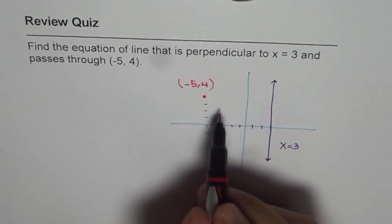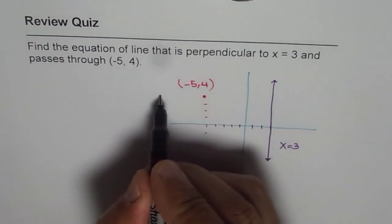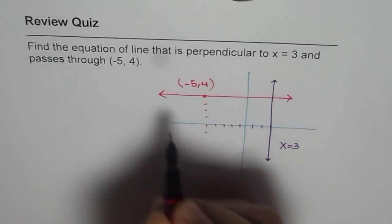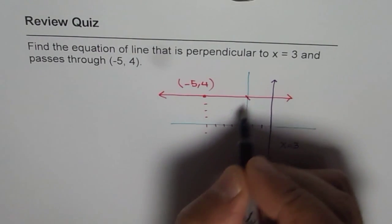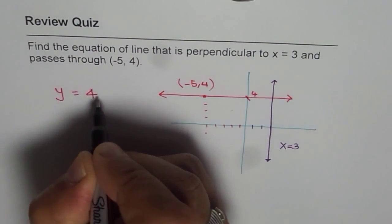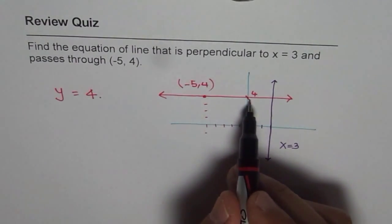And if I have to draw a line perpendicular, it has to be a horizontal line. Now this horizontal line will have only one equation and that is y equals 4. So y equals 4, at every point the value of y is 4.